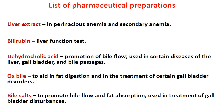A list of common pharmaceutical preparations: liver extract commonly used in pernicious anemia and secondary anemia; bilirubin used for liver function tests; dehydrocholic acid used for promotion of bile flow in certain diseases of the liver, gallbladder, and bile passages; ox bile to aid in fat digestion and treatment of certain gallbladder disorders; bile salts to promote bile flow and fat absorption used in treatment of gallbladder disturbances.